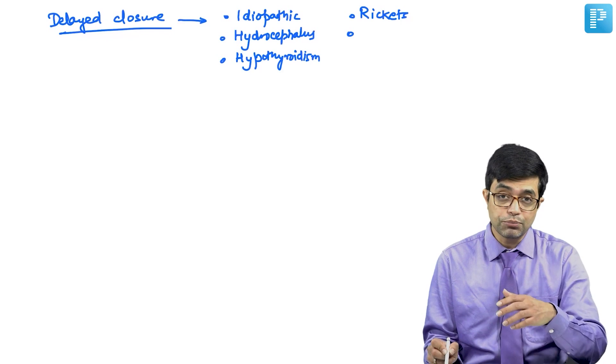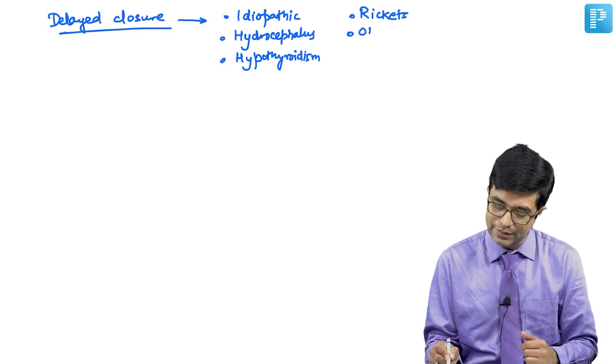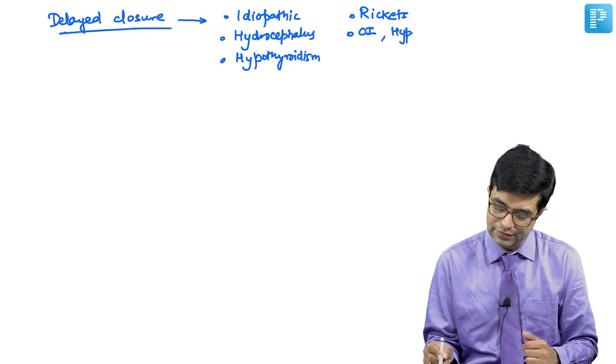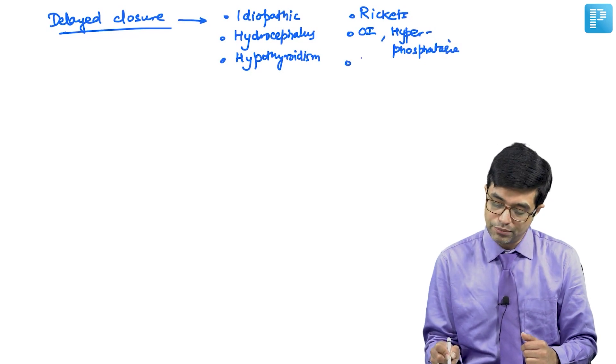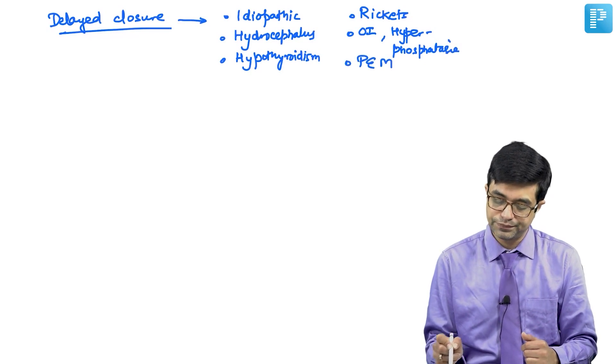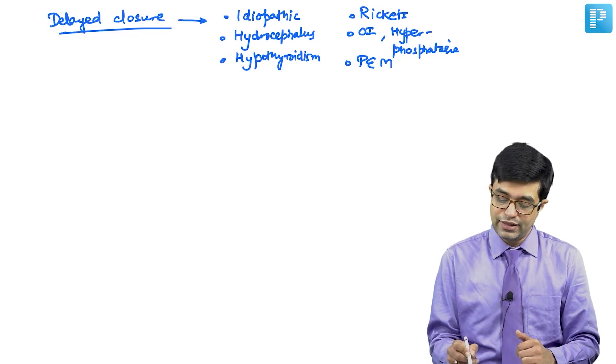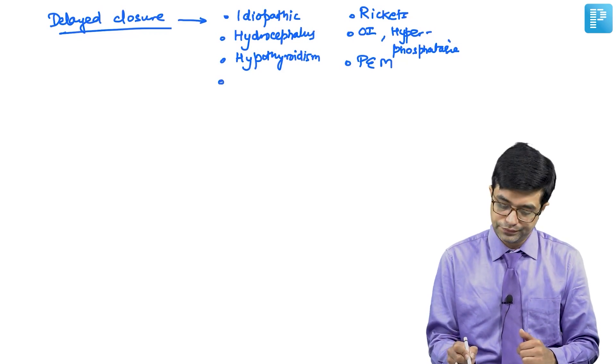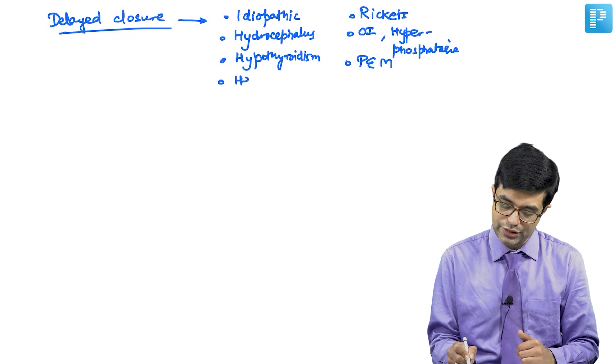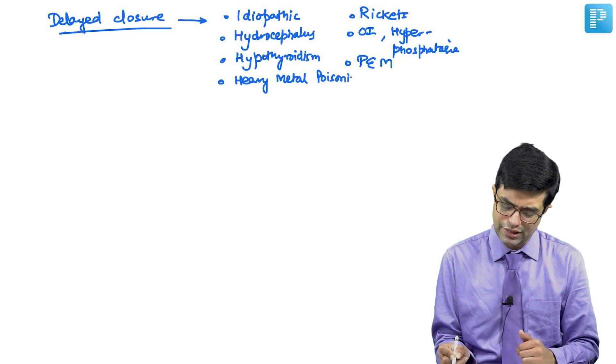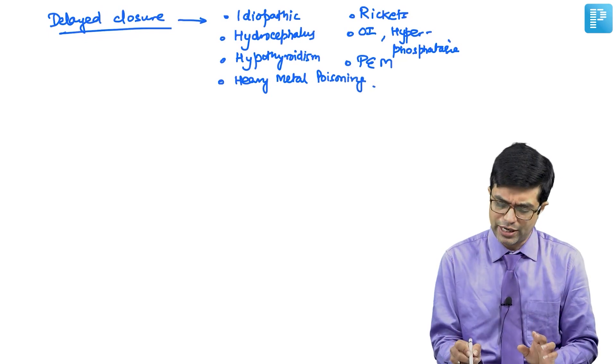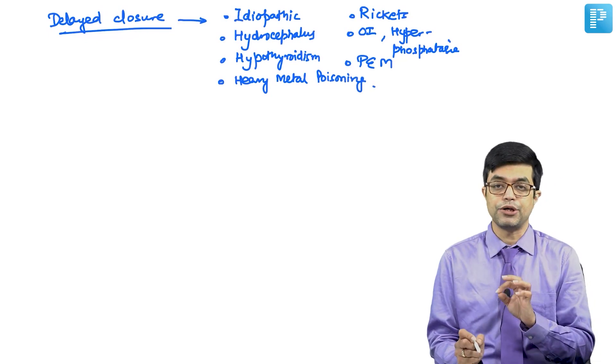It can occur in other bony disorders like osteogenesis imperfecta and hyperphosphatasia. It can also occur in protein energy malnutrition and heavy metal poisoning. These are the major causes from entrance point of view, the bare minimum that you should know.